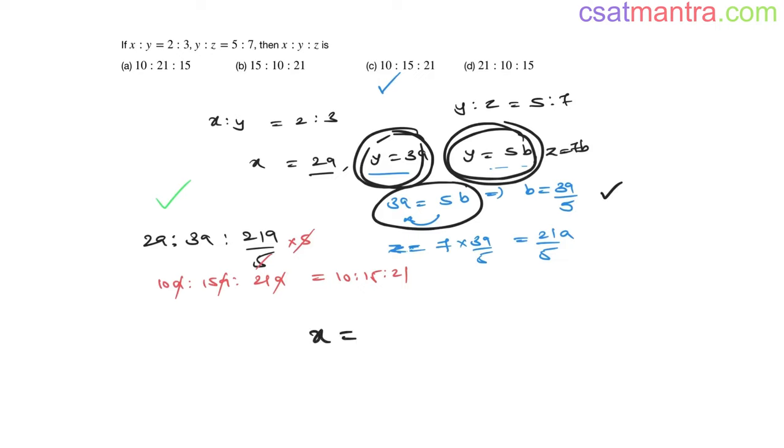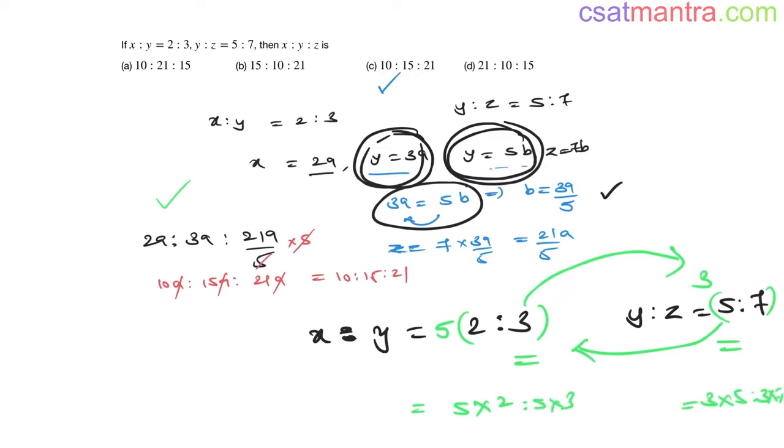See, I am having x is to y as 2 is to 3, y is to z as 5 is to 7. I want to make y equal in both the ratios. So I am multiplying this ratio with 5, multiplying this ratio with 3. Multiplying this ratio with this value 5, and multiplying this ratio with this value 3. So 5 into 2, and now 5 into 3 here. Here 3 into 5, 3 into 7. 5 into 2 is 10 here. 3 times 7 is 21. 5 times 3 is 15, not 21. 15 here, 15 here, 21.